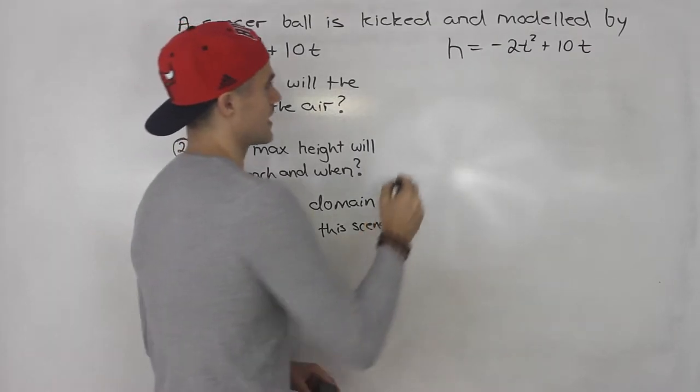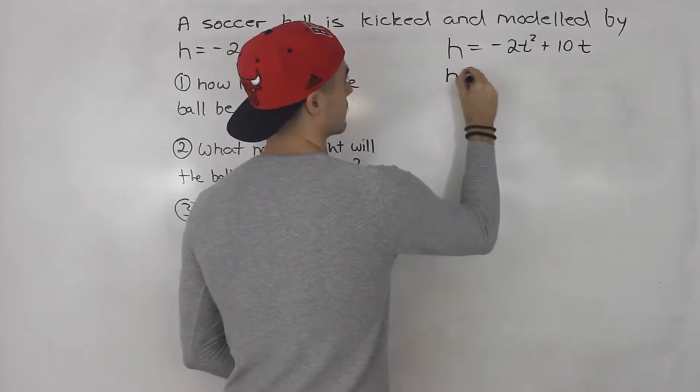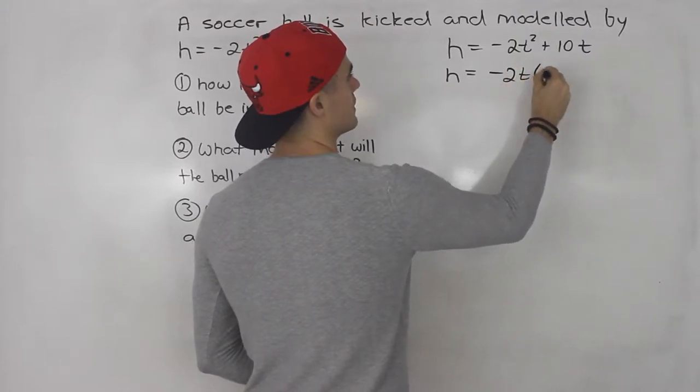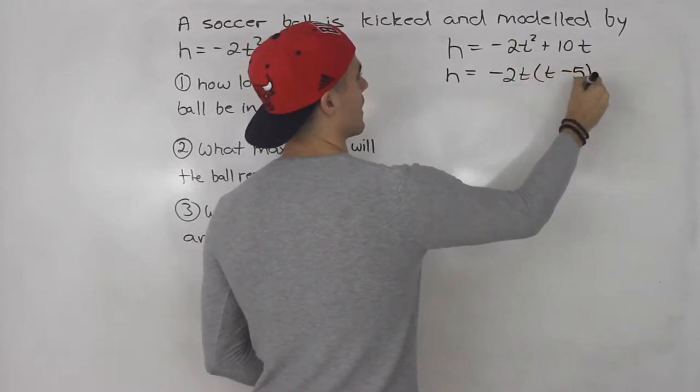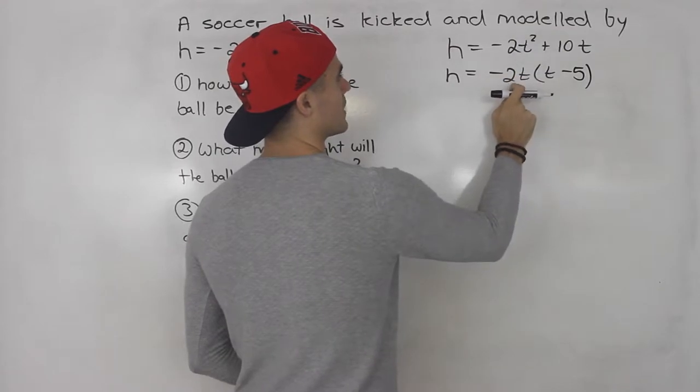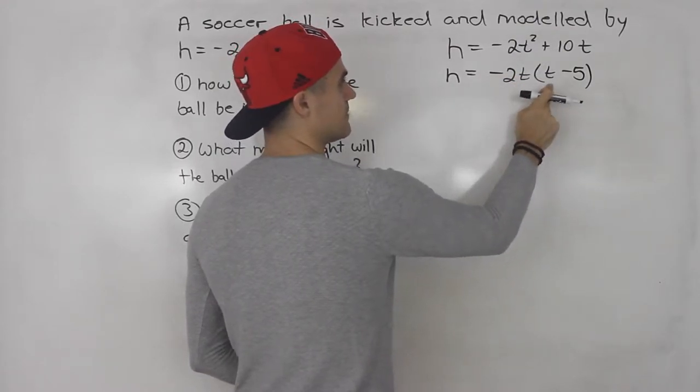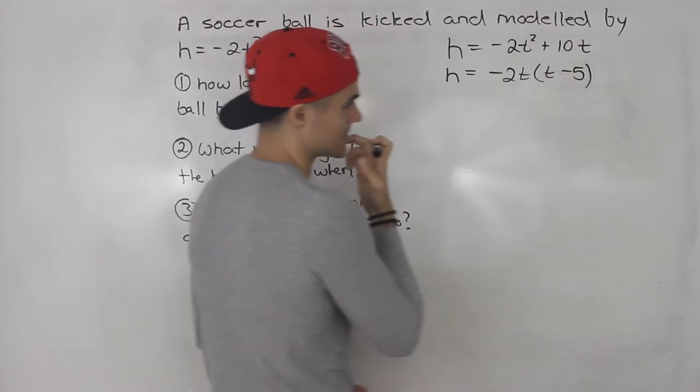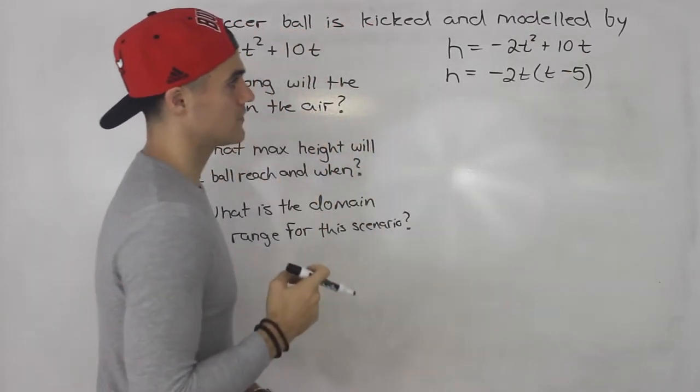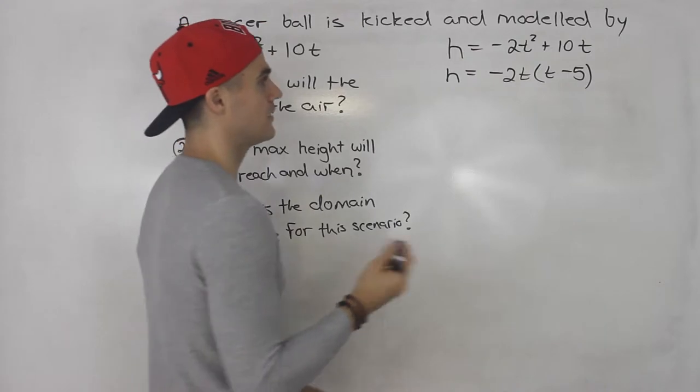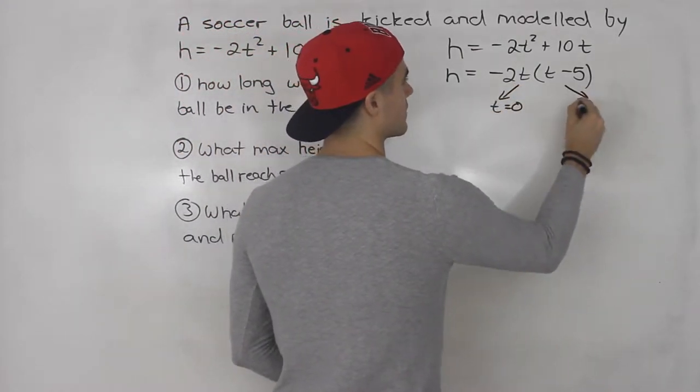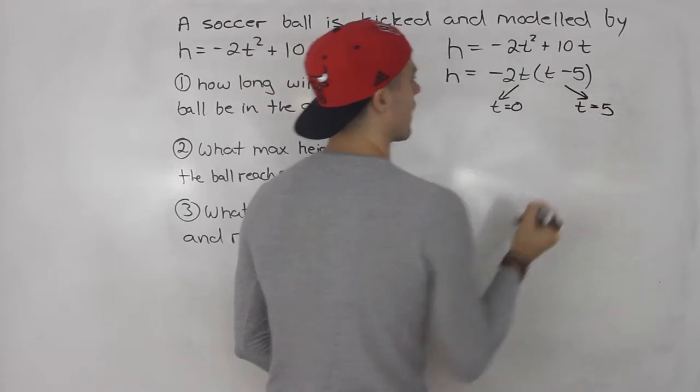And notice in this case, it's very easy to factor this because there's no c value. You can just take out a negative 2t from both. So you'd be left with t minus 5. Negative 2t squared divided by negative 2t is just t. 10t divided by negative 2t gives us minus 5. And then from here, it's easy to tell what the intercepts are, right? So here we'd have t equals 0 and here t equals 5.